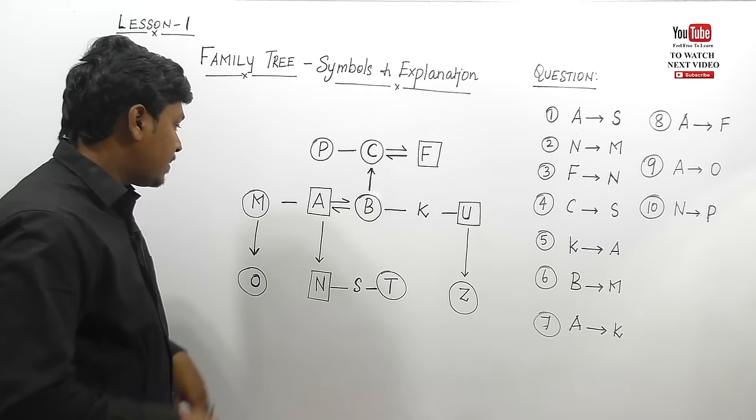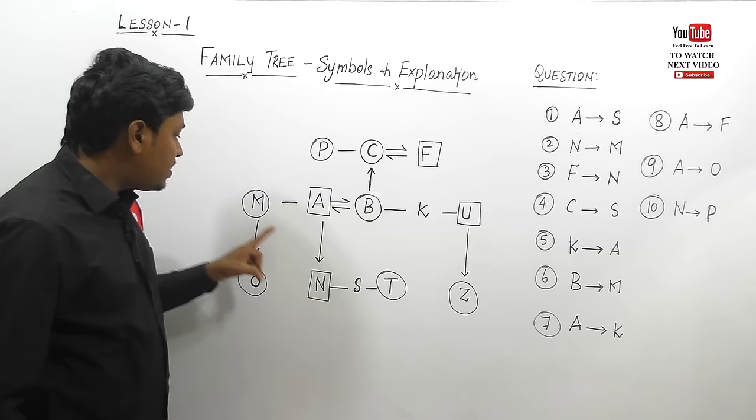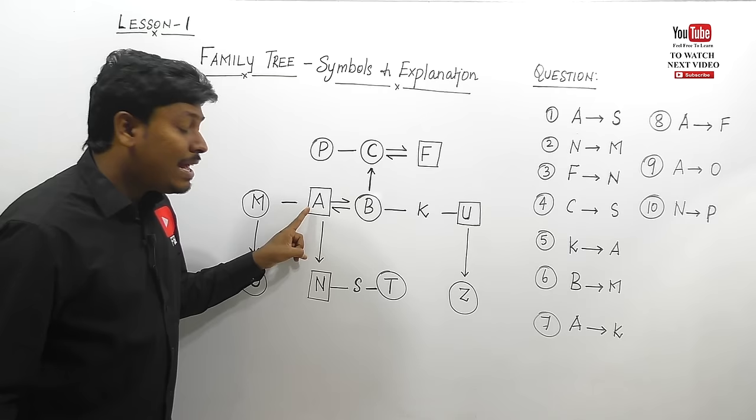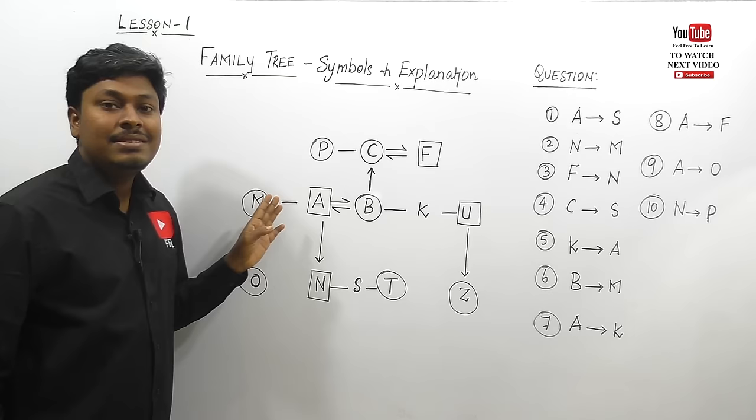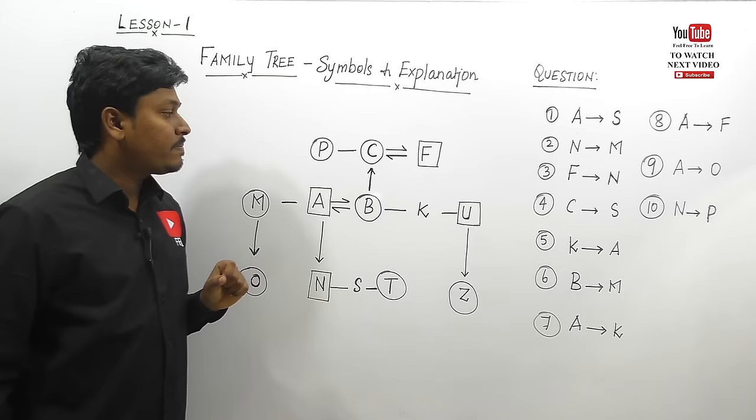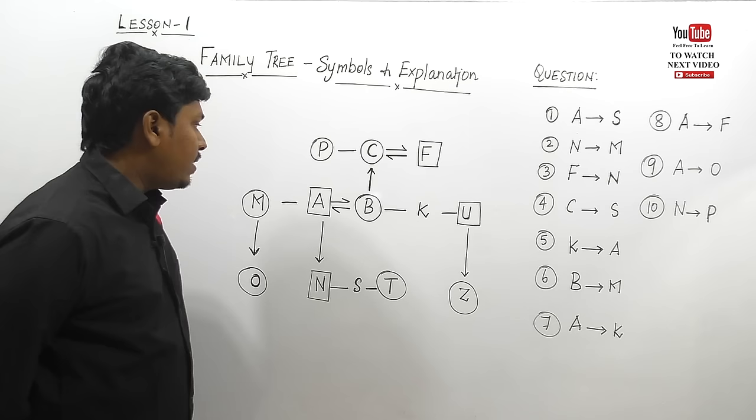Question 2: N to M — from N, what is the relation of M? From N, A is the father. Father's sister is M. Father's sister is called aunt. So the answer for question 2 is aunt.